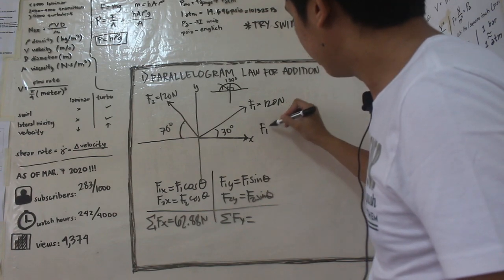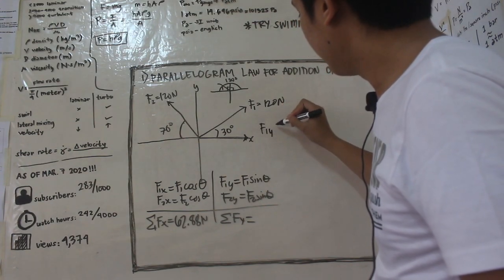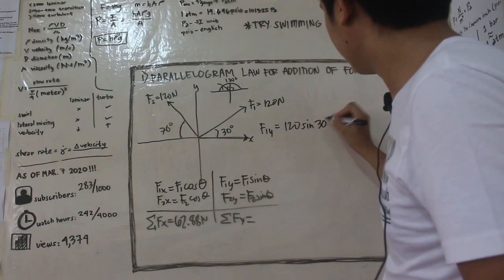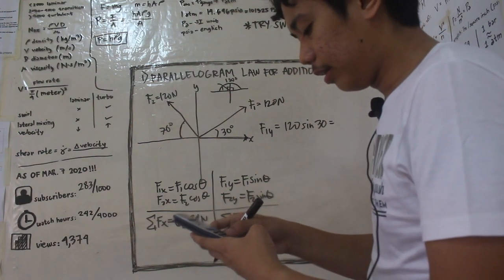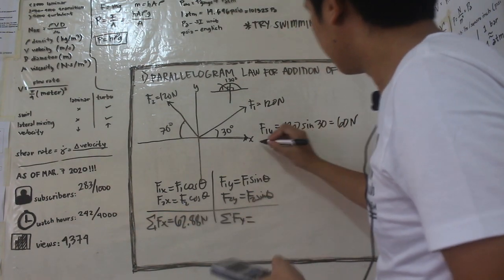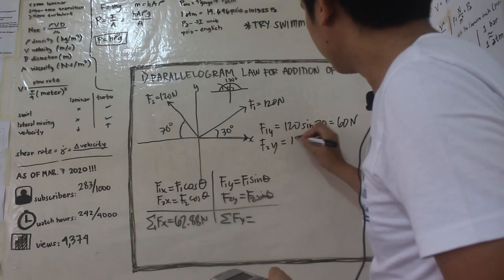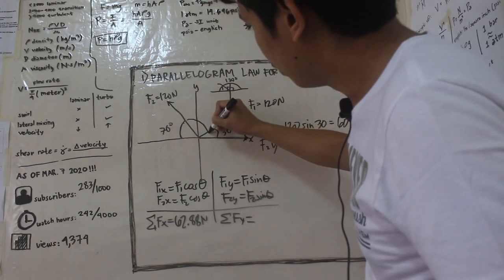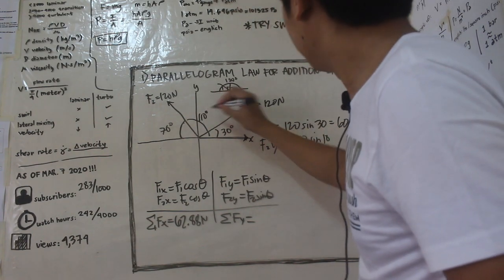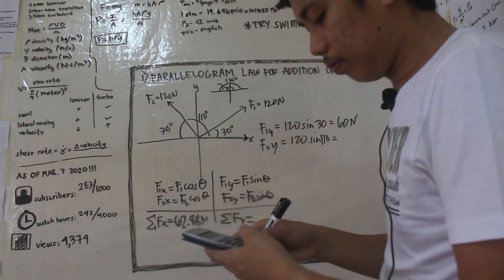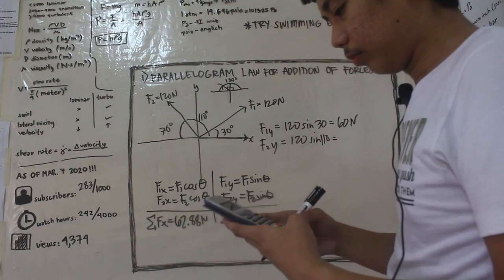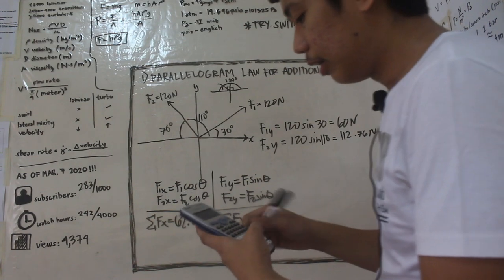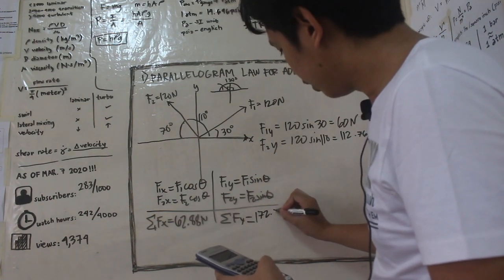So f1 of y is equal to 120 sine 30. Ilan yung 120 sine 30? Solve natin, it's 60 newtons. It's 60 newtons. Tapos f2 of y is equal to 120 sine, as I mentioned kanina, ito yung angle na kukunin natin which is 110. So 110 is equal to 112.76 newtons. So i-add natin yung dalawa, makukuha tayo ng 172.76 newtons.